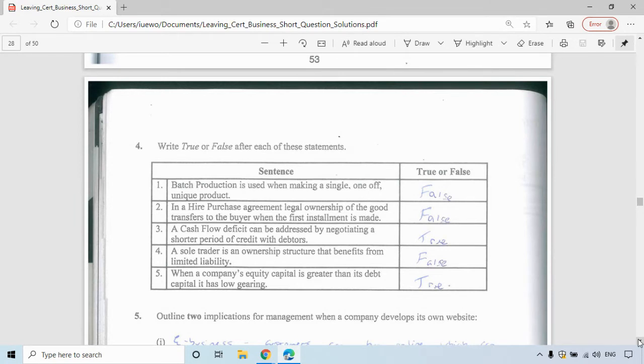Cashflow deficit can be addressed by negotiating a shorter period of credit with debtors. Yes, debtors are people who owe us money. So if we have a deficit, we are spending more than we're taking in. If we give a shorter period of time to our debtors, they'll pay us earlier, which is beneficial for the cashflow forecast. A sole trader is an ownership structure that benefits from limited liability. That's incorrect. A sole trader has unlimited liability, which means they're responsible for all debts a business may have, and they have to sell personal assets to pay for them. When a company's equity capital is greater than its debt capital, it has low gearing. That is true. Equity capital is like your shares and debt capital is borrowing. When you have more equity than debt capital, you are lowly geared.